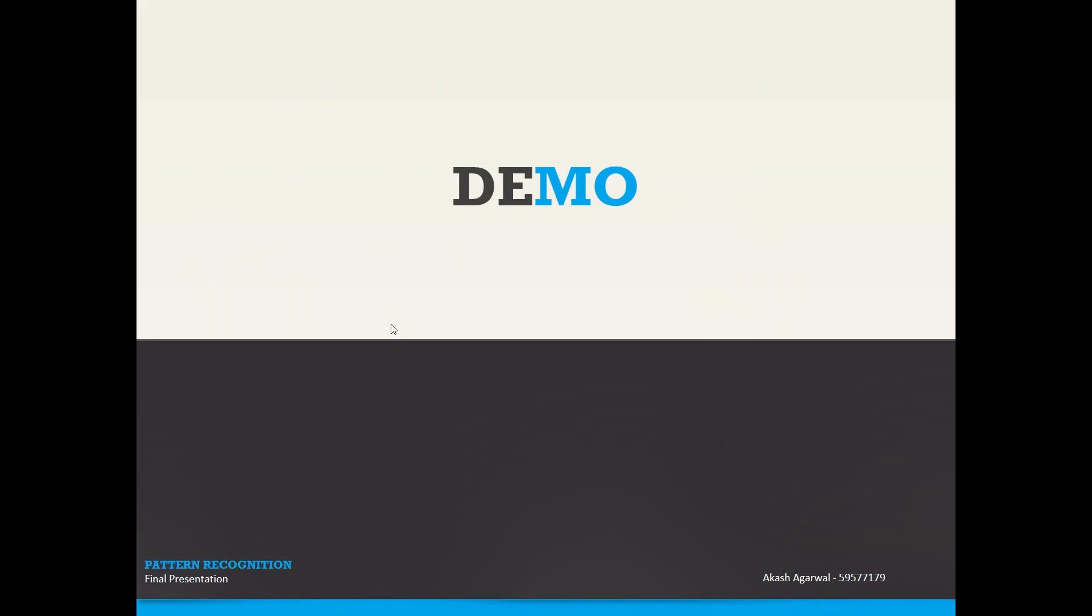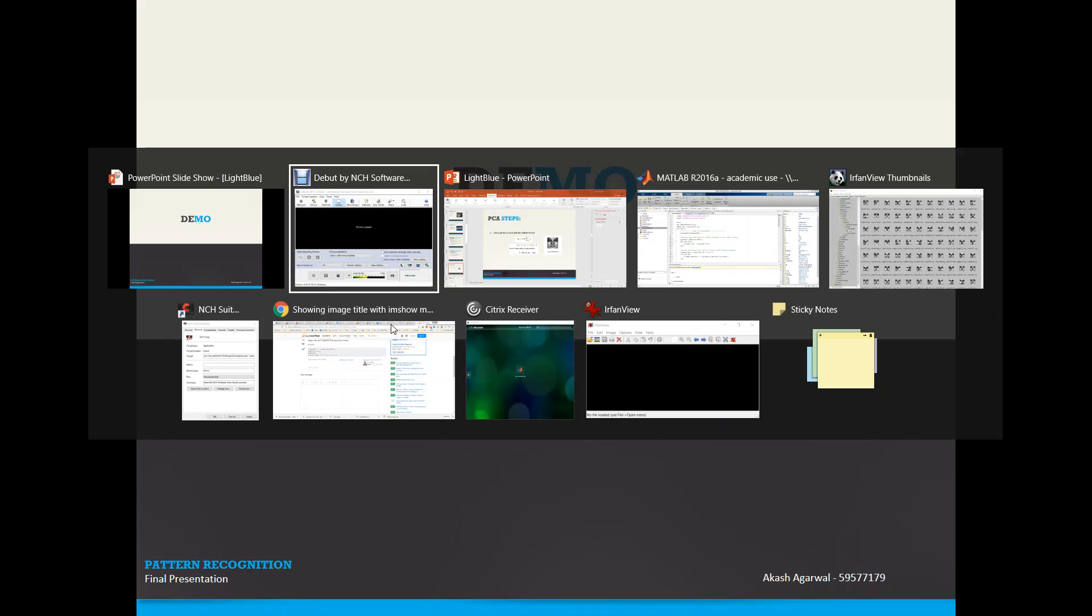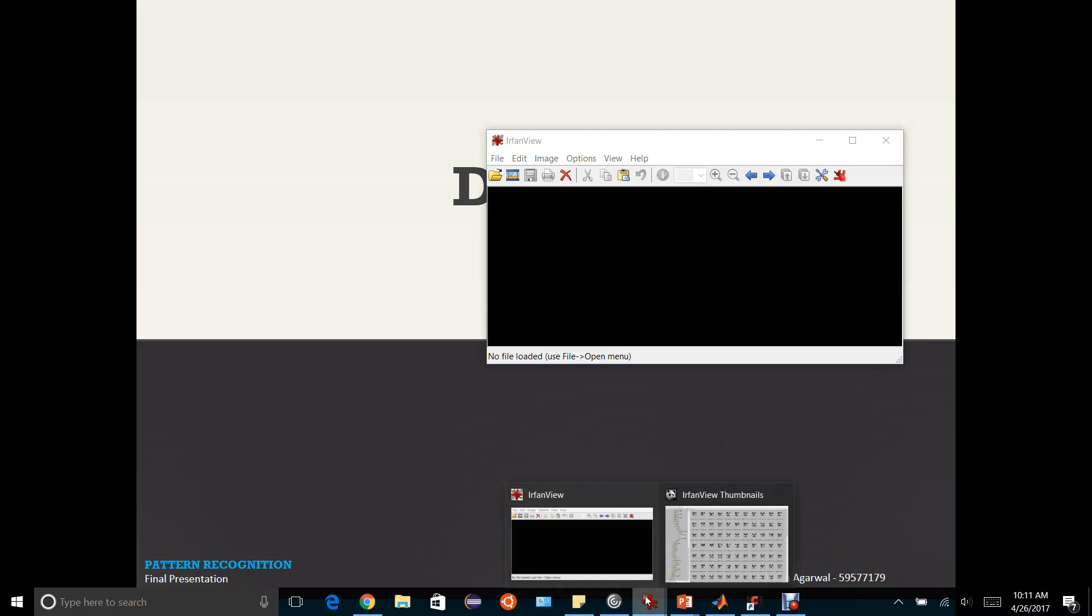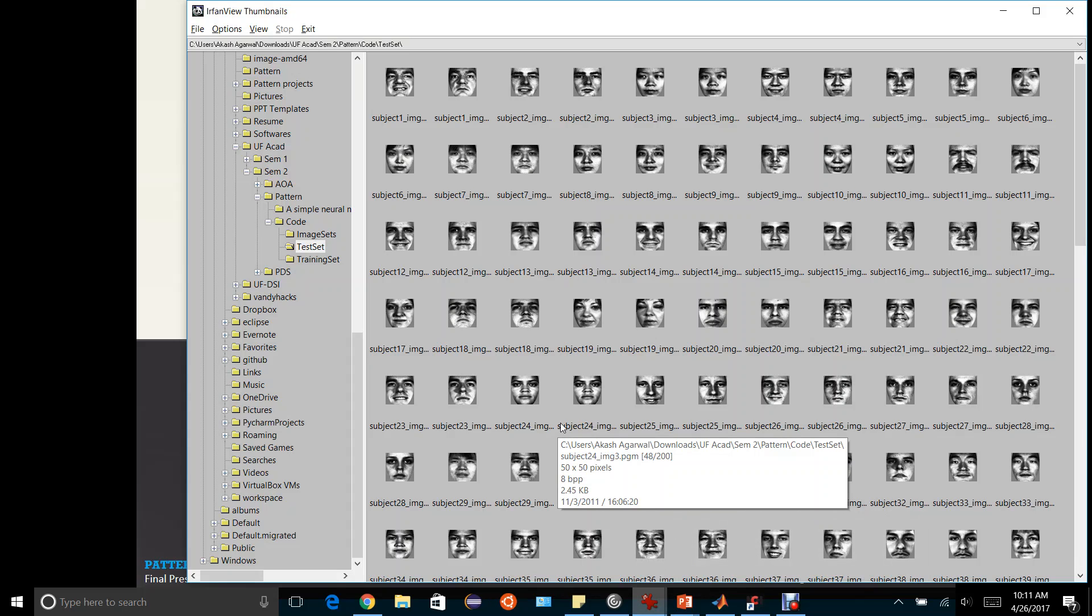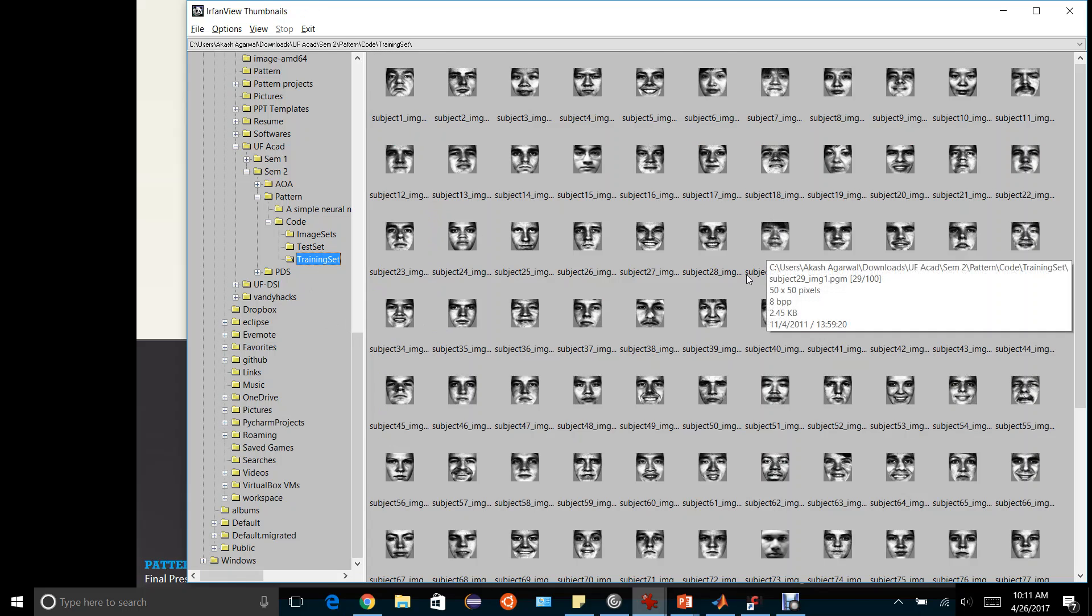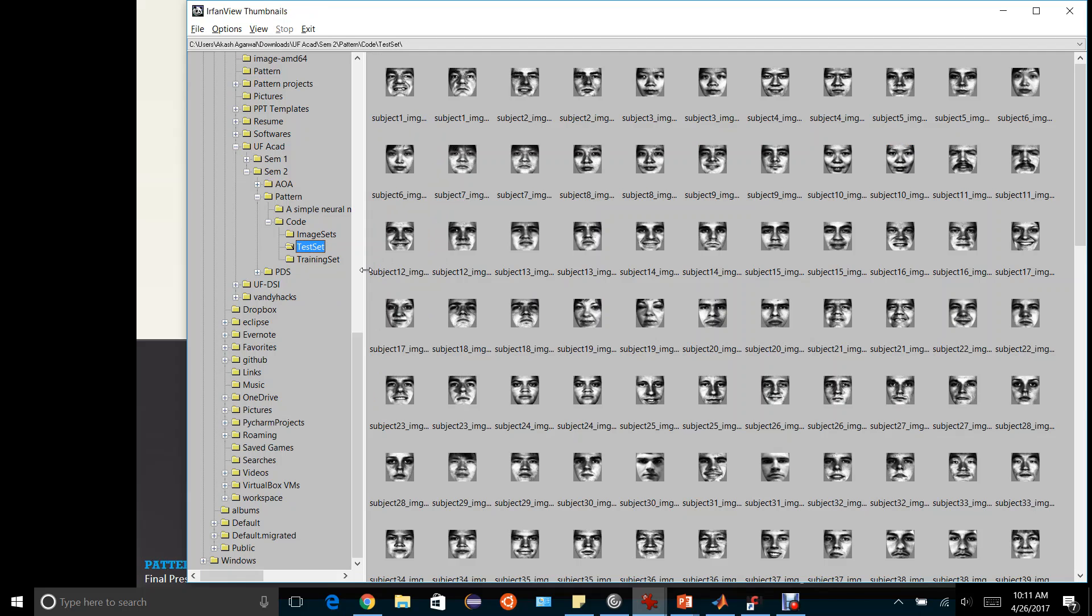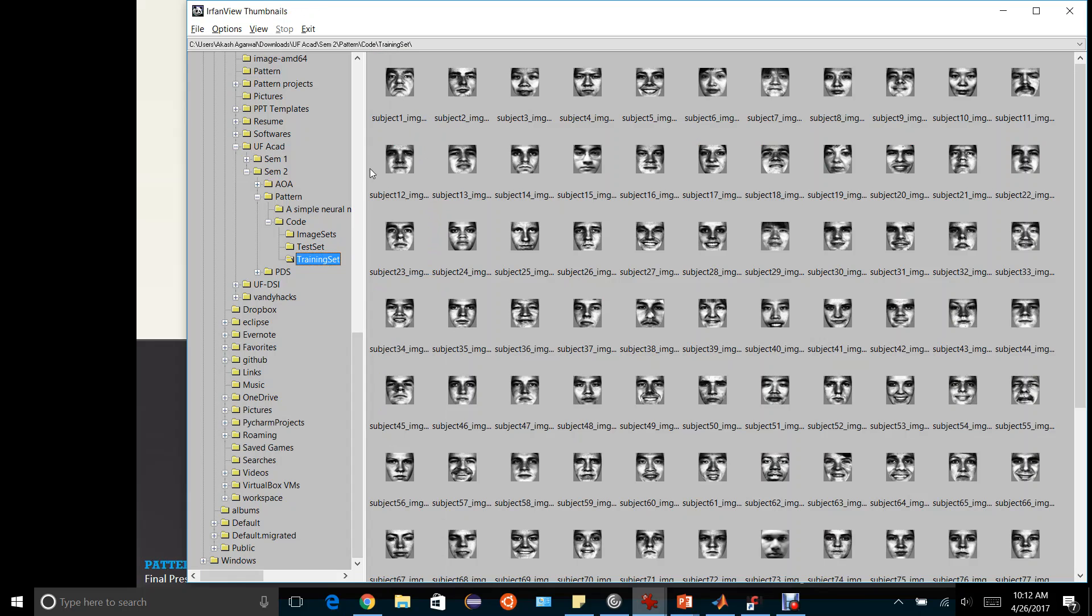Now let's take a quick demo of the project. Here I want to show the test and the training set. The training set consists of 100 pictures of 100 different individuals, and the test set consists of 200 grayscale images, two images per person. These two images belong to the same person in the training set.